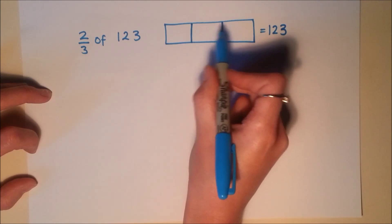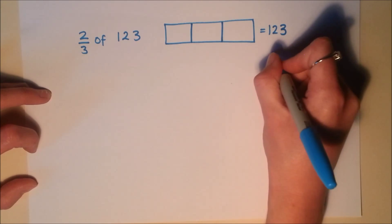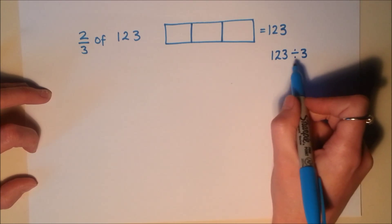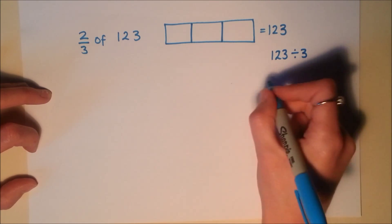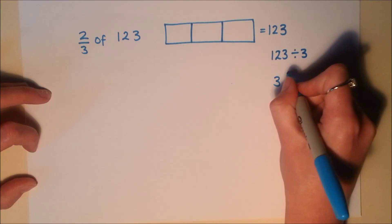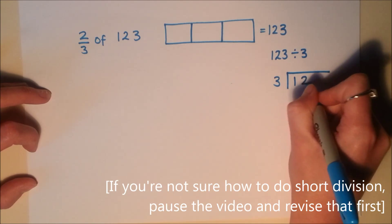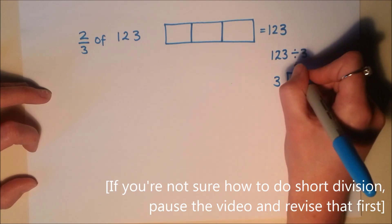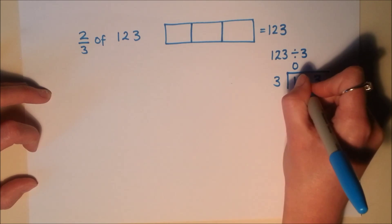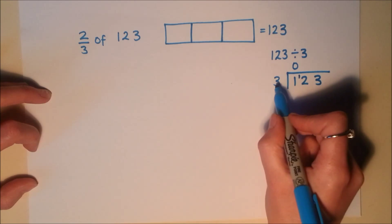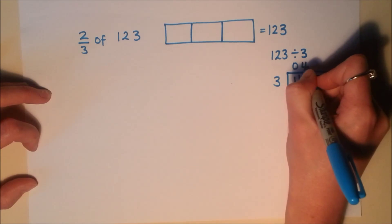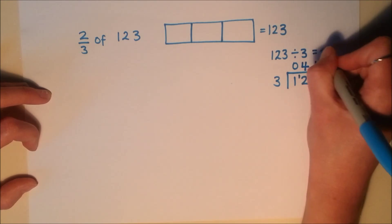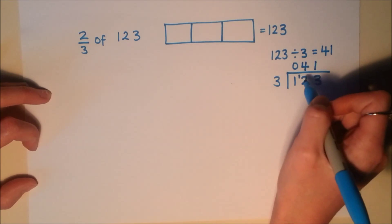I need to work out how much one of these parts is worth. So I'm going to do 123 divided by 3. Now, it would be really silly to count up in 3s until you get to 123. So I'm just going to use a quick example of short division here to work that out. So, 3s into 1 don't go. So I'm going to carry that 1 into my next column. 3s into 12 go 4 times. And 3s into 3 go once.